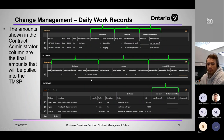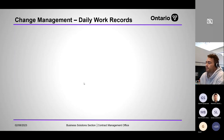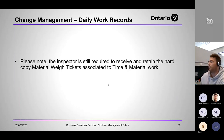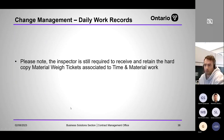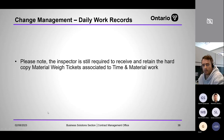The amounts shown in the CA's entries in the final right-hand columns will be what's pulled into the TMSP. Please note the inspector is still required to receive and retain the hard copy of the material weigh ticket — don't assume you can throw those out. We still need a copy and still require CAs to provide hard copies at the end.